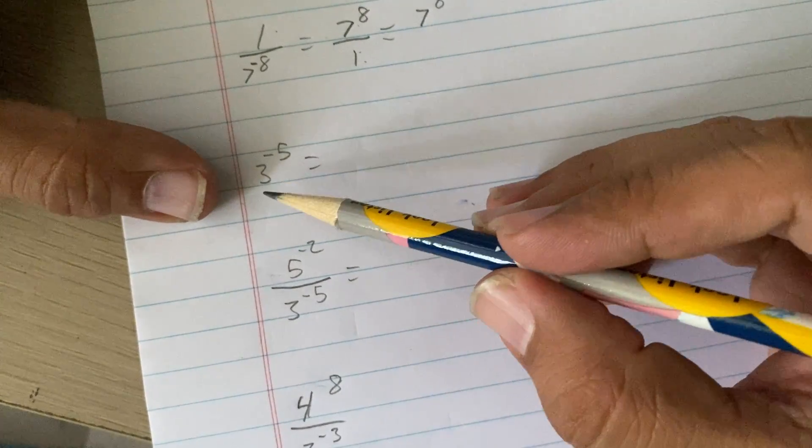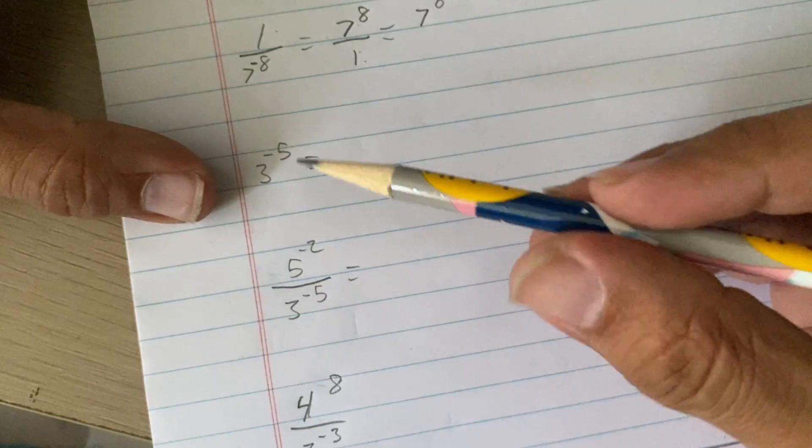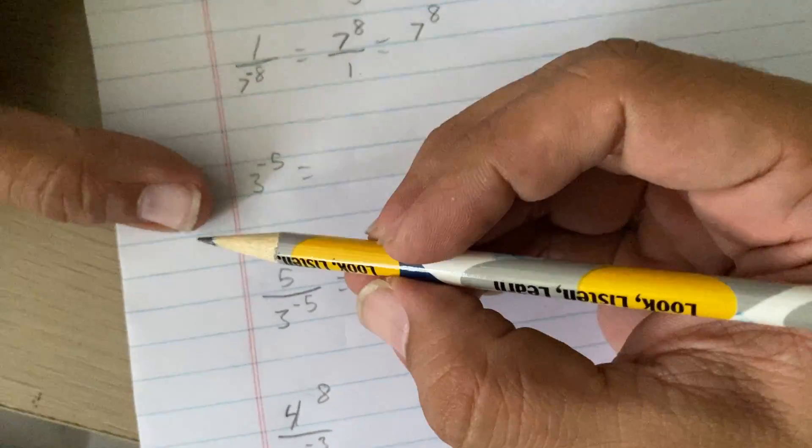The next thing I have here is 3 to the negative 5. Now, you can't see it, but it's definitely not at the bottom of a fraction. So, if it's not at the bottom, that means it's at the top. So, it kind of looks... Whoa, relax.